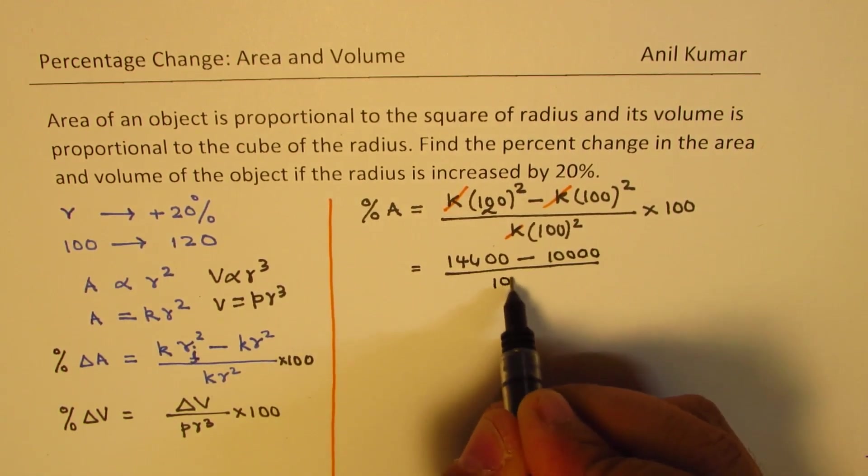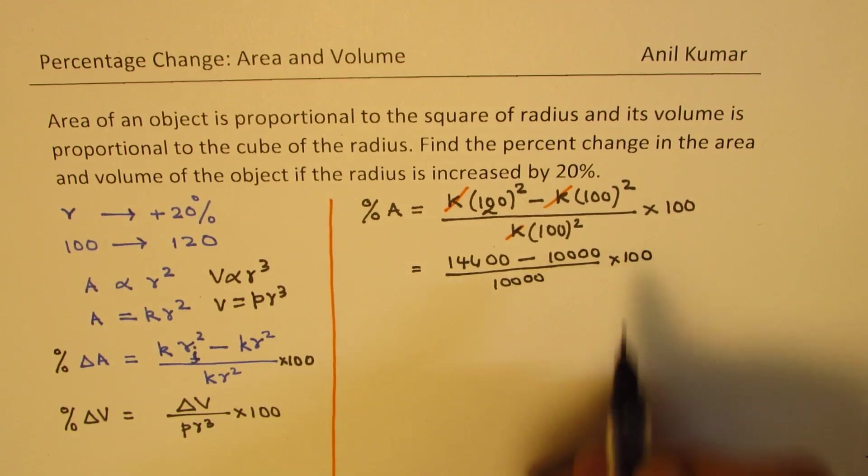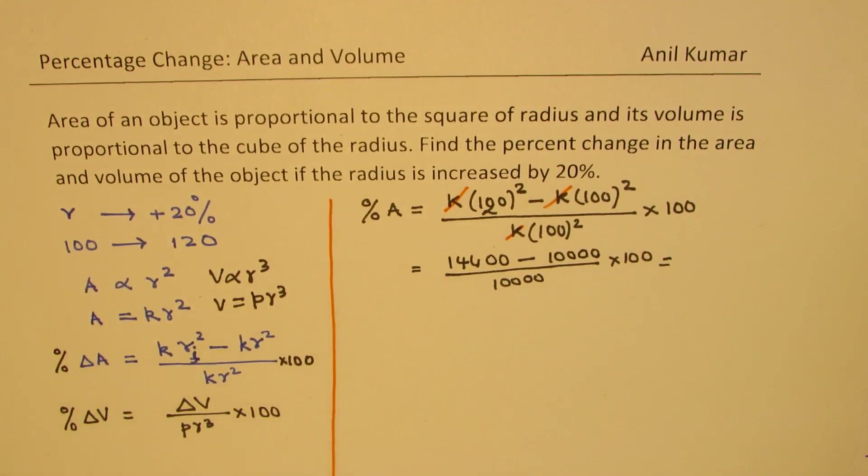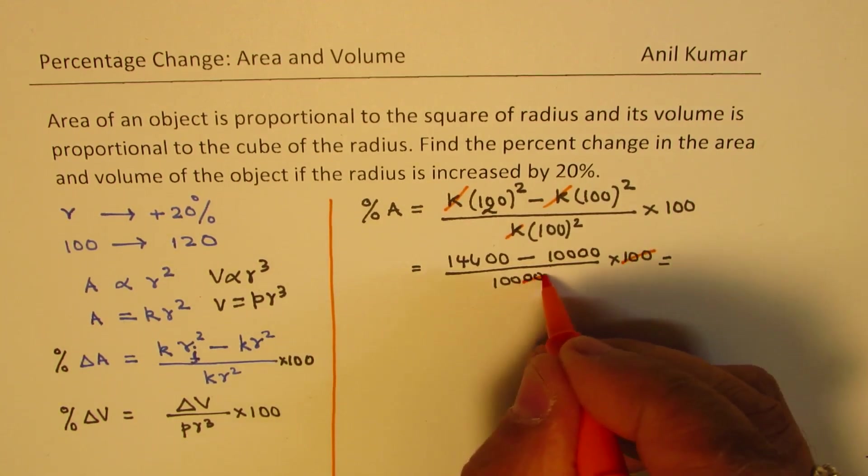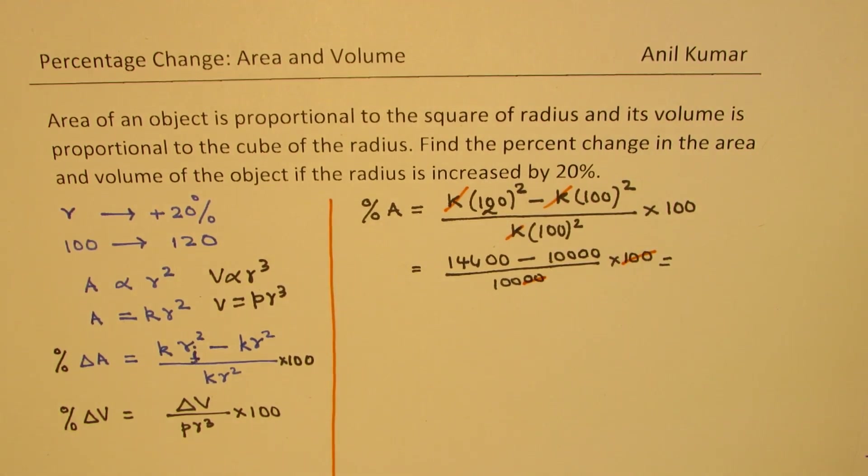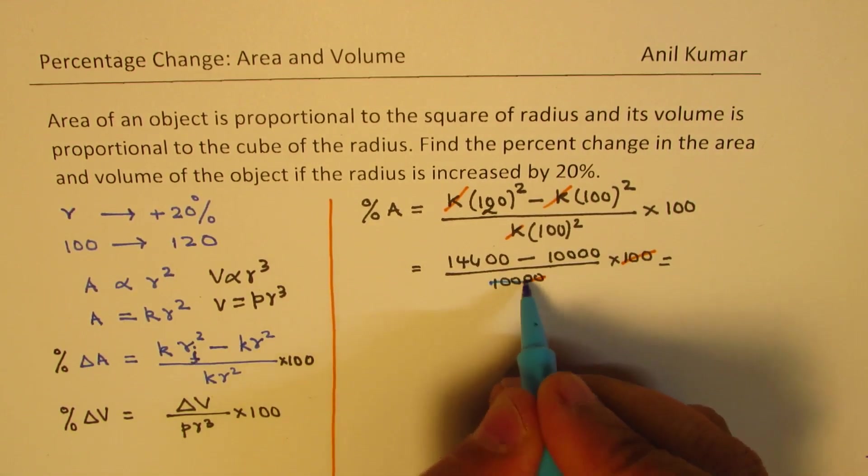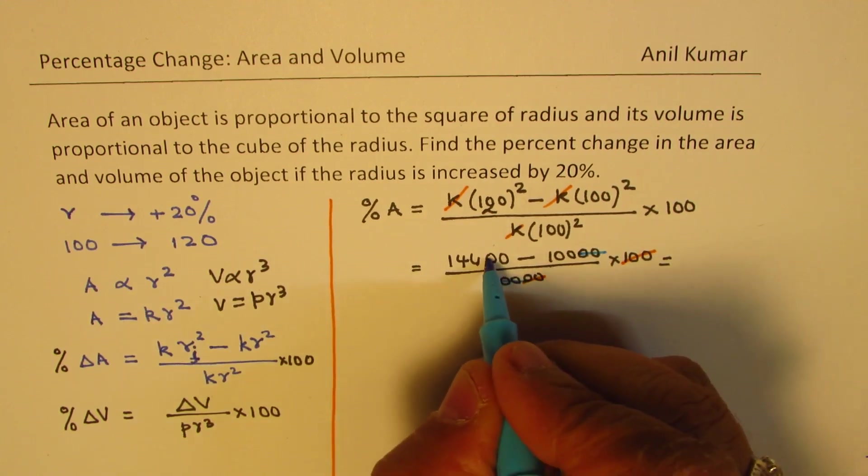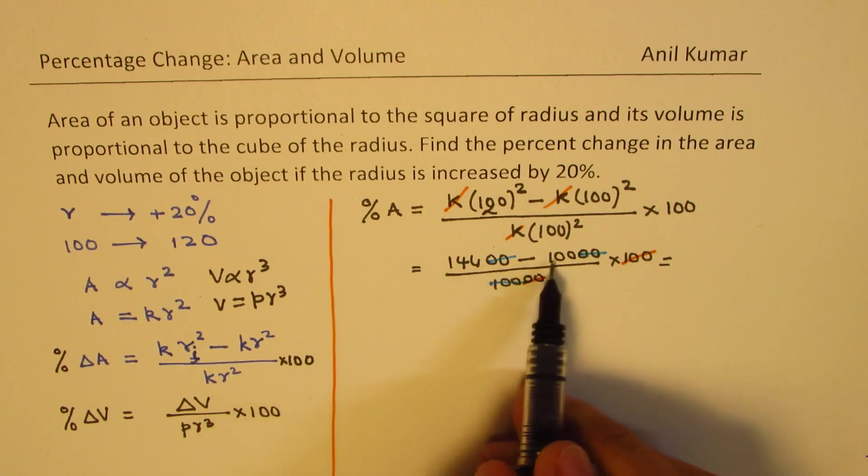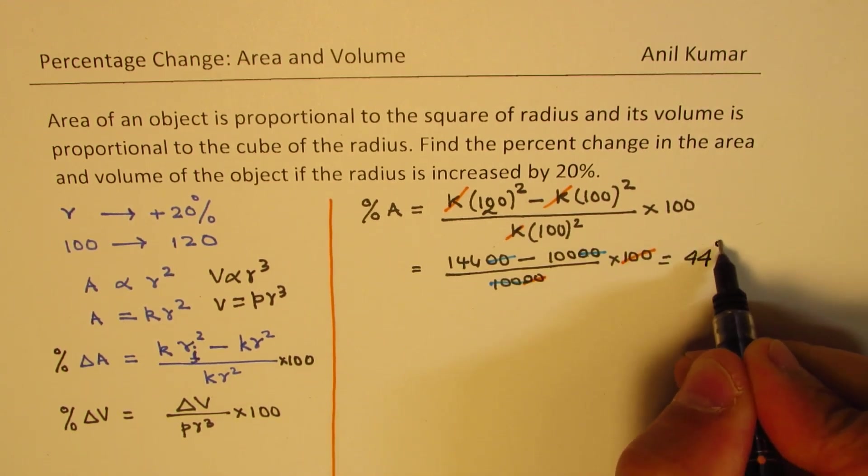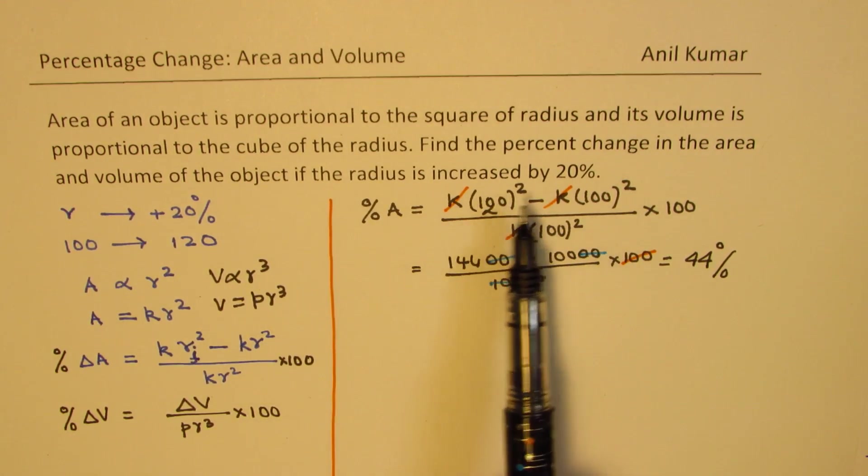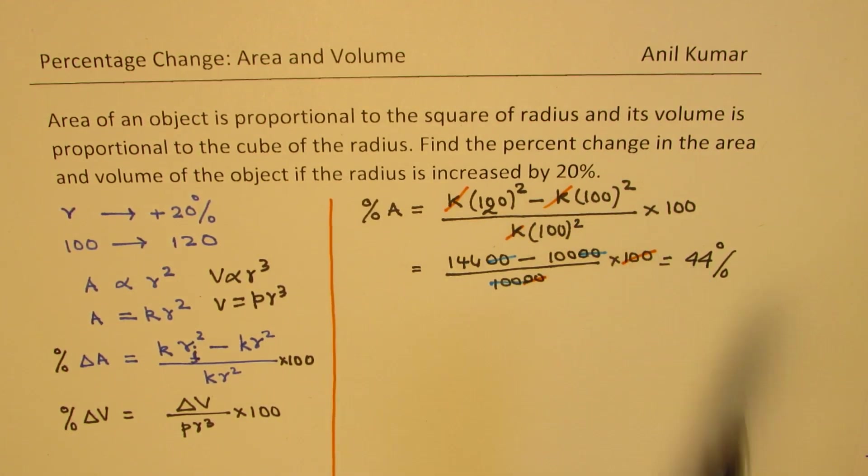Now calculation is 12 is 144 and then we have two zeros. So it is 144 and then we have two zeros minus 100 then two more zeros divided by 100. Two more zeros times 100. Now that clearly gives you one value on the top. Let's calculate extra zeros from here. Now these two zeros we can actually calculate and cancel these two from these two. So we have 144 minus 100 and that is 44 percent. Do you see how easy the calculation is?